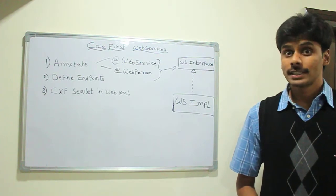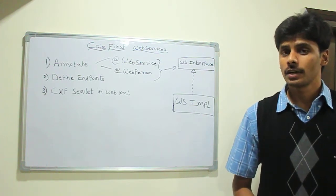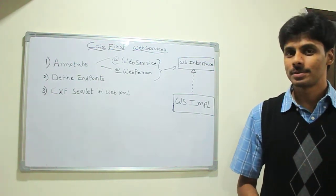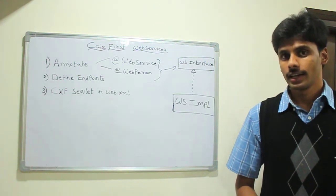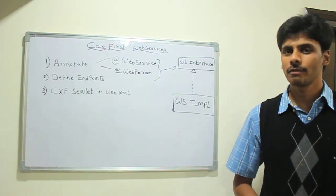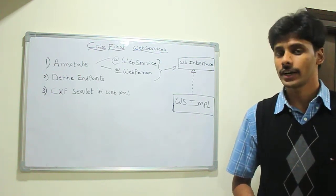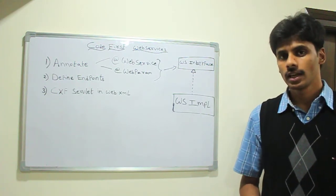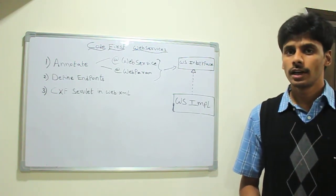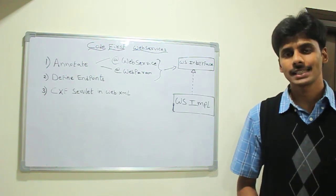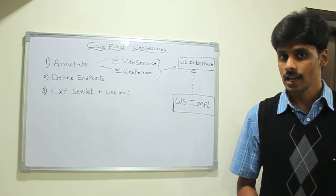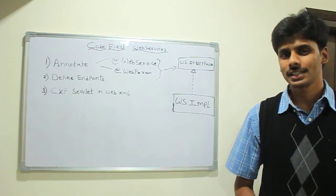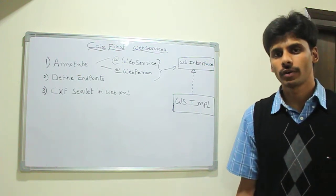From the previous web services implementation presentation, you have learned how to implement a WSDL-first, or top-down, or contract-first web service using Apache CXF. It was done in three simple steps. The first step was to create or hand-write a WSDL file and generate the stubs, and implement one of the web services classes implementing those generated stubs. The second step was to define our web services implementation class as an endpoint in the CXF servlet.xml, and the third step was to declare the CXF servlet in the web.xml, which is the deployment descriptor of our application.